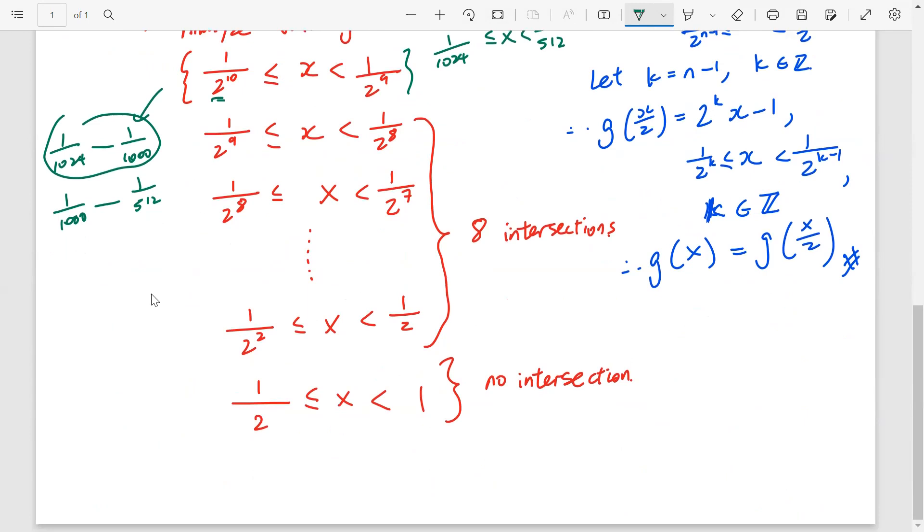So, for n equals to 10, 2 power 10x, minus 1, equals to x. 2 power 10, minus 1, for x, equals to 1. So now we can say that x is equals to, 1, over 1023.